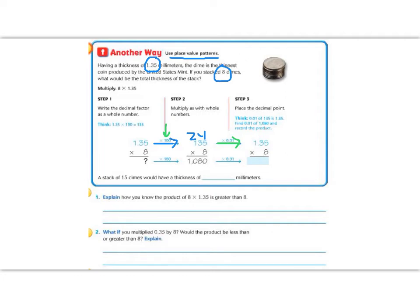So instead of being 135, it's really 1.35. So if I have 1,080, and I have 1, 2 place values, then I need to put my decimal back 1, 2 place values. So a stack of dimes is going to be 10.80 millimeters tall.